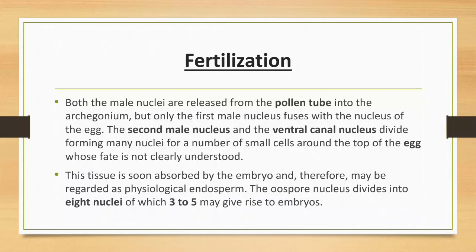Fertilization: Both male nuclei are released from the pollen tube into the archegonium, but only the first male nucleus fuses with the nucleus of the egg. The second male nucleus and the ventral canal nucleus divide, forming many nuclei and a number of small cells around the top of the egg whose fate is not clearly understood. This tissue is soon absorbed by the embryo and therefore may be regarded as physiological endosperm. The oospore nucleus divides into eight nuclei, of which three to five may give rise to embryos.